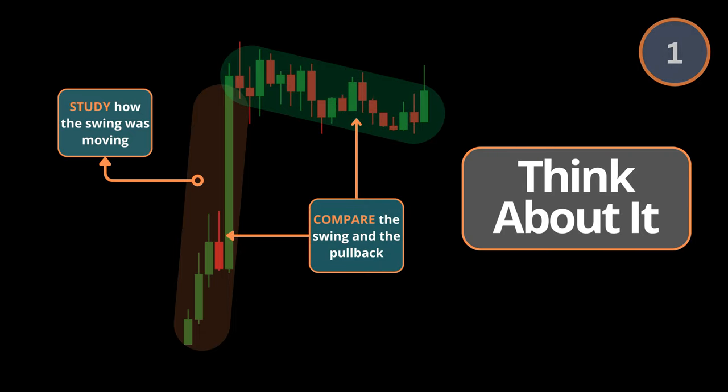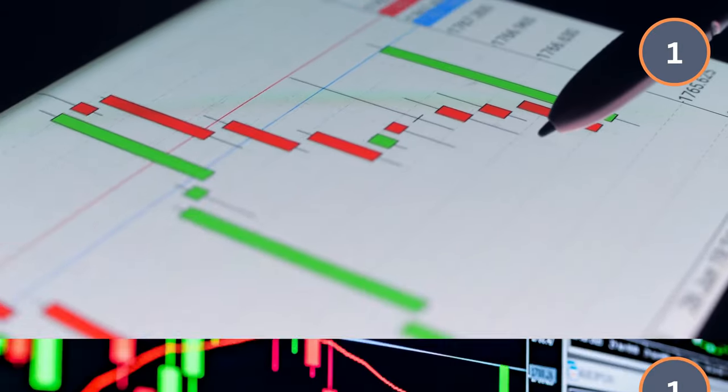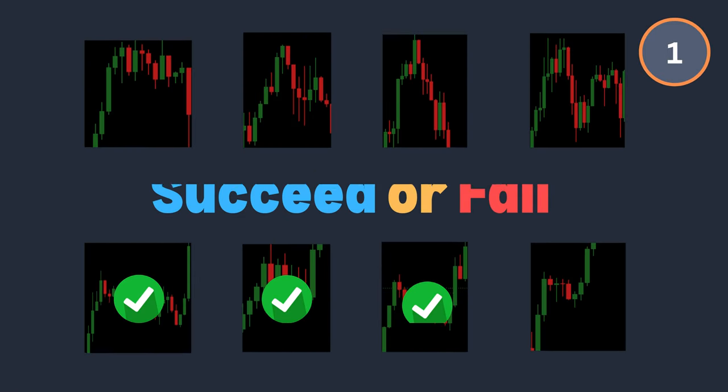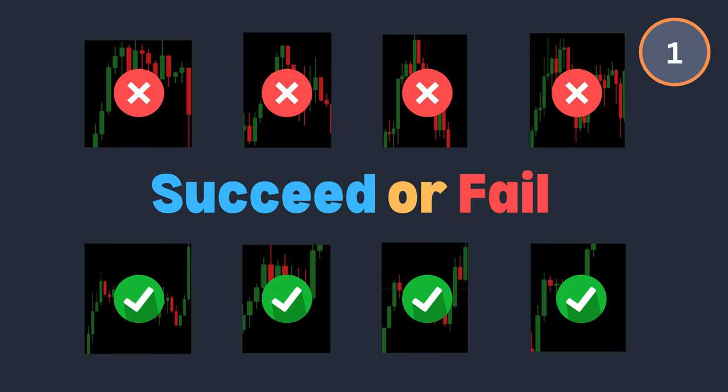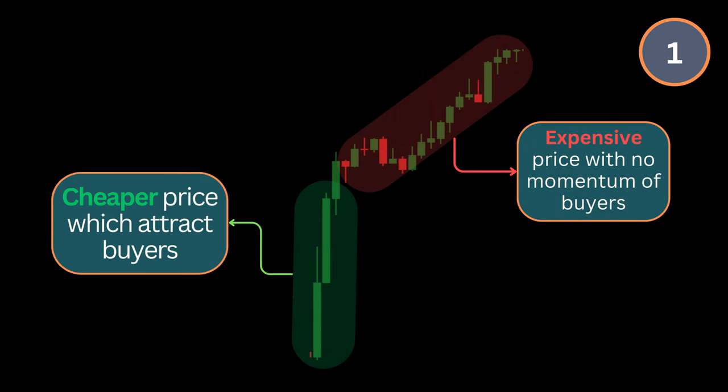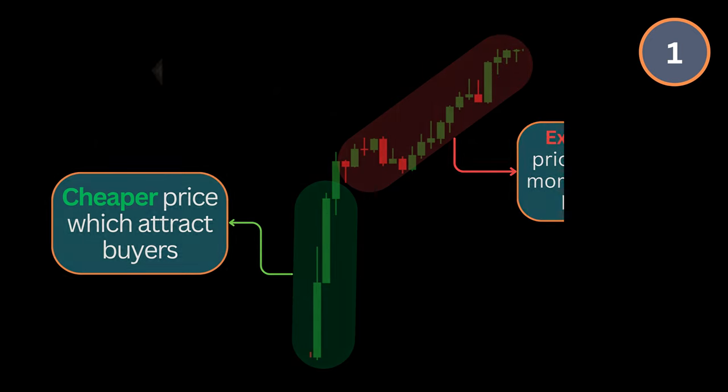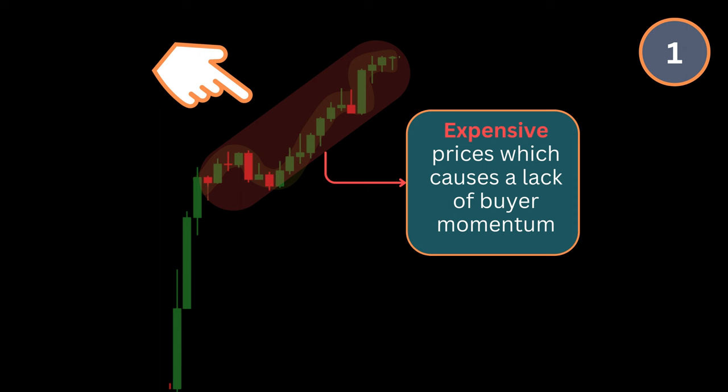The reason for doing this is because after spending tons of hours studying different types of pullbacks and what makes them succeed or fail, I found that markets pull back because of expensive price which causes a lack of momentum from the participants of the market.